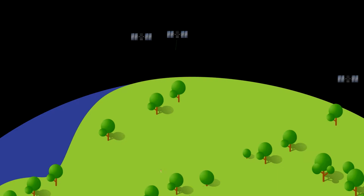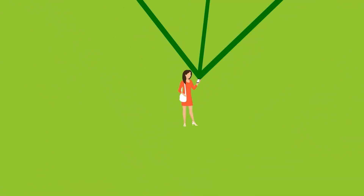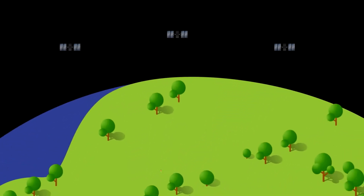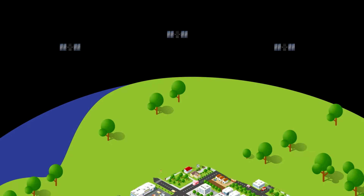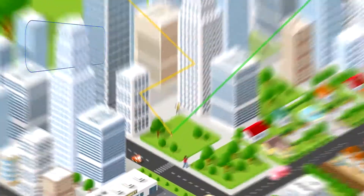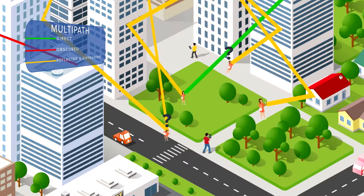MultiPath is an interference when the signal from the satellite gets reflected multiple times from surrounding objects. Those signals arrive together with the direct signal to the device, and this causes disruption in the navigation solution calculated by the device.